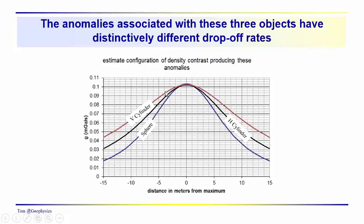Now, the vertical cylinder falls off less rapidly than the horizontal cylinder, and this is for a profile which crosses directly over the point directly above the vertical cylinder. And of course, we do have mass which is extending down a significant distance beneath the surface. So that produces a rather shallower, smaller gradient in the drop-off than we see for the horizontal cylinder or for the sphere.